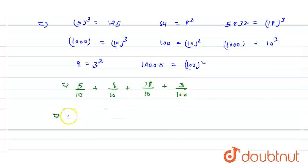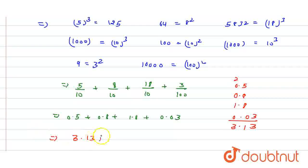So clearly this will be 0.5 plus 0.8 plus 1.8 plus 0.03. Now we add them. So that will be 0.5 and 0.8 and 1.8 and 0.03. So that here I have 3, here I have 1, 2 I have carry, that is equal to 3. So clearly my final answer is 3.13.